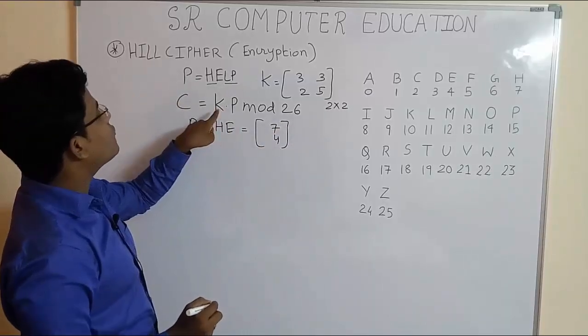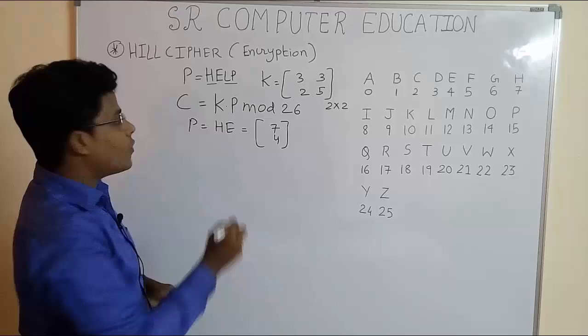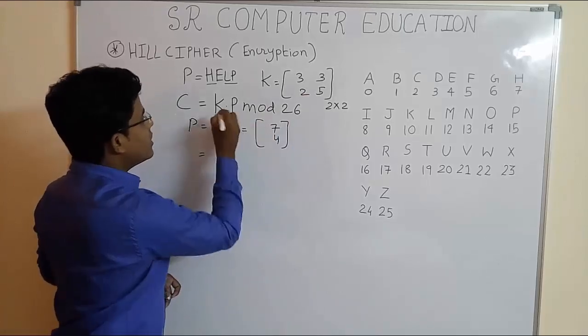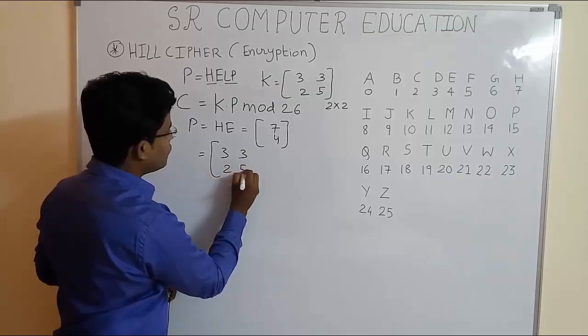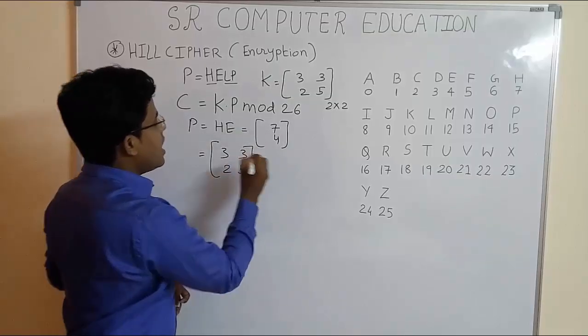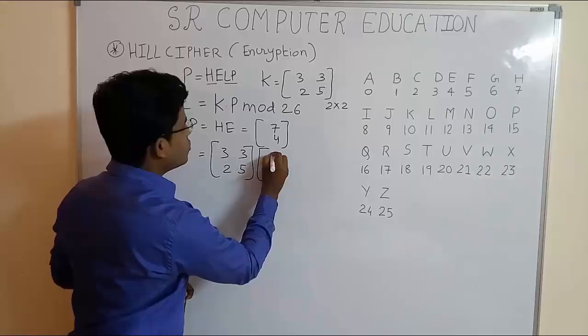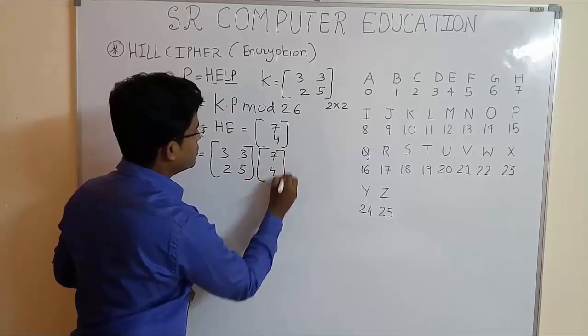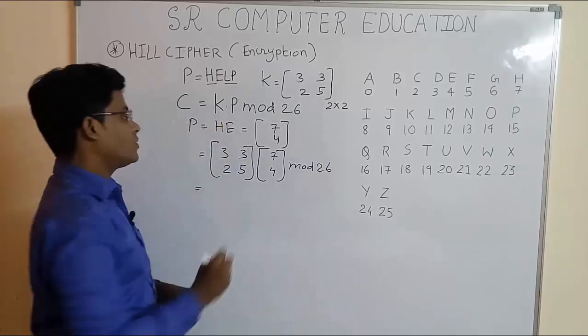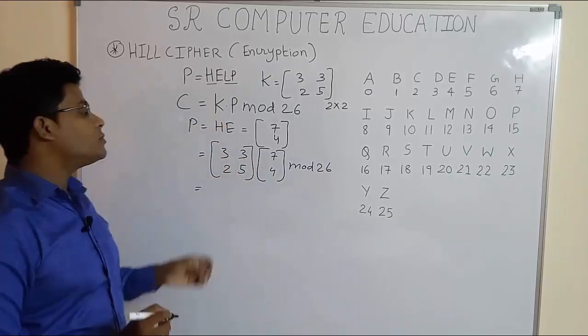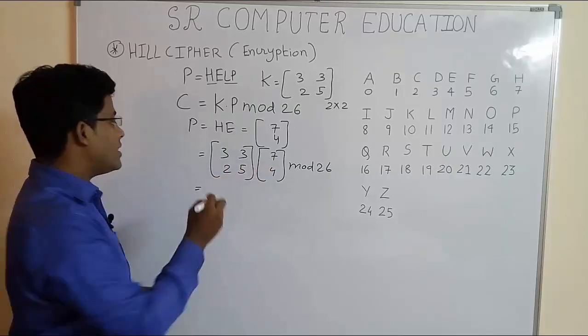Now substitute the value of K and P in this formula. So we get K equal to 3, 3, 2, 5 and P equal to 7 and 4 and then mod 26. Now we have to do the matrix multiplication of these two matrices.